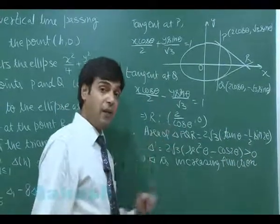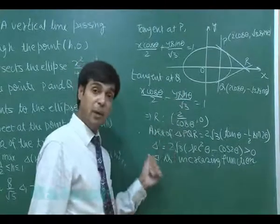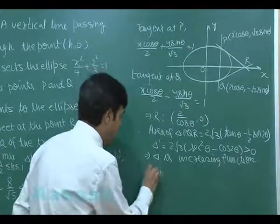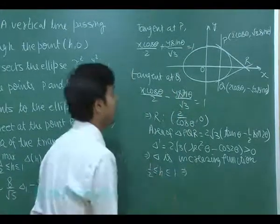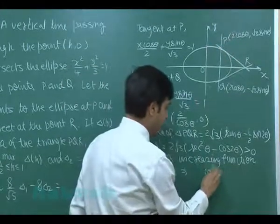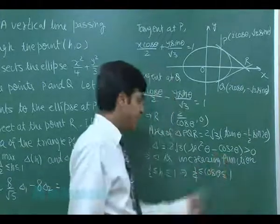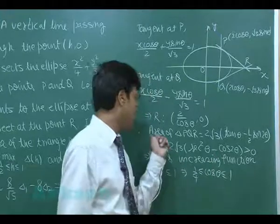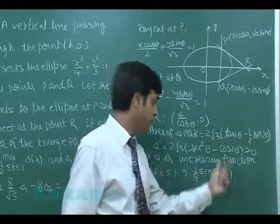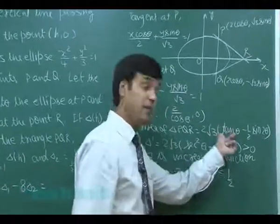Now, h is lying between 1/2 and 1. When function is increasing, the first value will be giving me minimum, the last will be giving me the maximum. h is between 1/2 and 1. h means this point means 2cosθ. So, we have cosθ is lying between 1/4 and 1/2. When we substitute cosθ = 1/4 here in area, that will give me minimum, that is Δ₂. When I put cosθ = 1/2 here, I will get the maximum value.